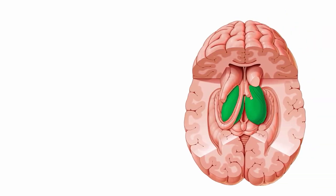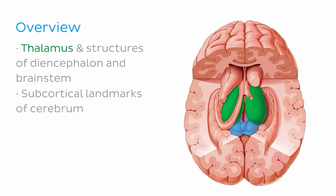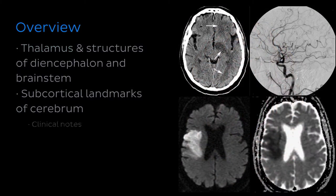Before we jump into today's tutorial, let's take a quick look at what you can expect to learn. We're going to be preparing you for your gross neuroanatomy lab by examining this illustration of the thalamus and its neighbouring structures. We'll begin by looking at the thalamus and some structures of the diencephalon and brainstem, then move on to examine some subcortical landmarks of the cerebrum which immediately border the thalamus. And as always, we'll wrap up with some quick and interesting clinical notes.